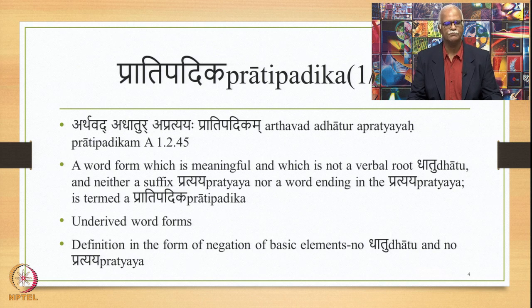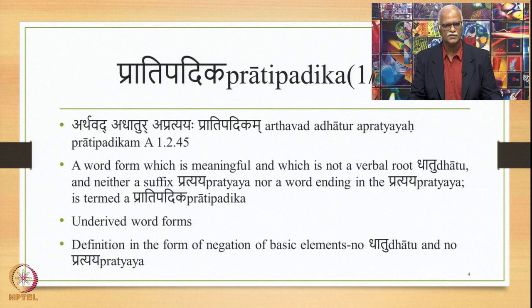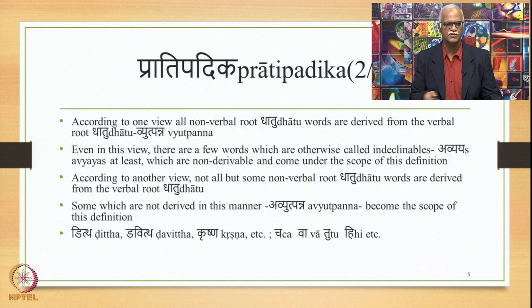Pratipadikam is the Saudhnya. Arthavat Adhatur Apratyaya is the Saudhni — these are the qualifications of the Saudhnya which is a Shabda Rupa. What this Sutra eventually states is that the underived word forms which do not have a Pratyaya at the end are to be termed as Pratipadika. This definition eliminates certain items by negation of basic elements: no Dhatus, no Pratyayas, but the meaningful units are termed Pratipadika.